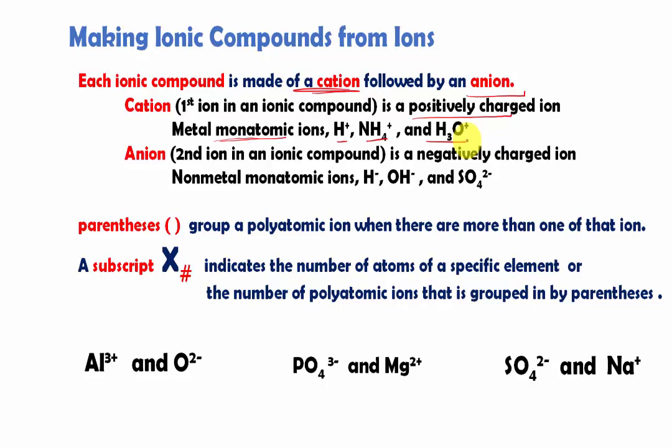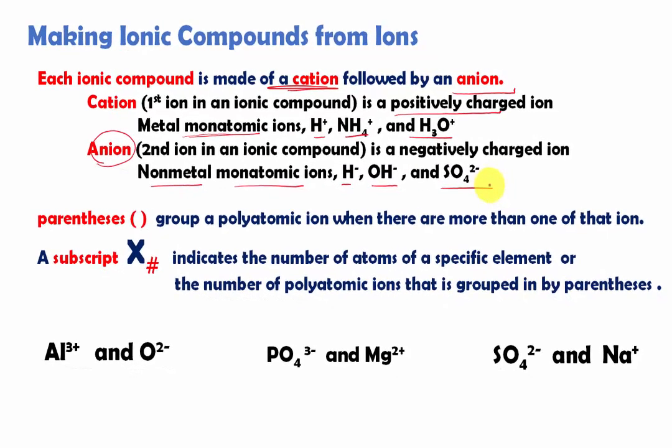Once you identify the cations, the rest of the chemical formula is basically your anions. And here are the common anions. It could be non-metal monatomic ions, hydrogen that has gained one electron, hydroxide and sulfate, and a list of polyatomic ions that you need to remember.